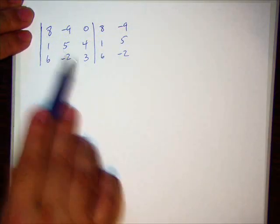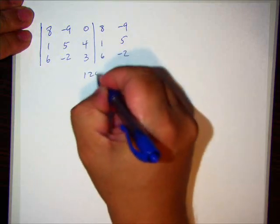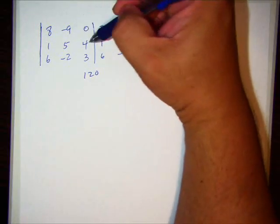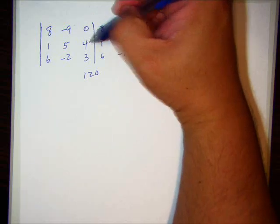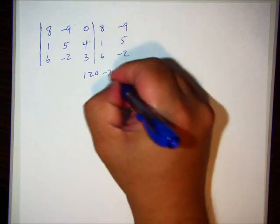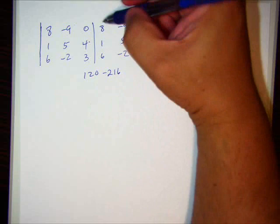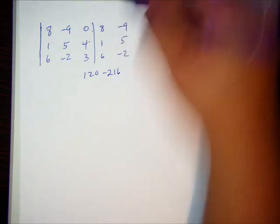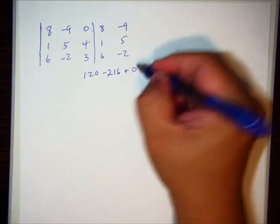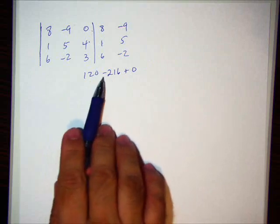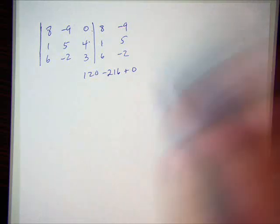8 times 5 is 40. Times 3 is 120. Oh, boy, these are getting big. Negative 9 times 4 is negative 36 times 6 is negative 216. Then we have 0 times blah, blah, blah. Well, 0 times anything is 0. Remember that's a plus negative. I got lazy and just wrote minus.